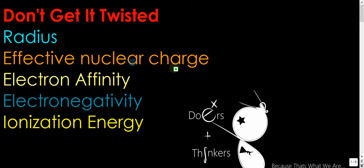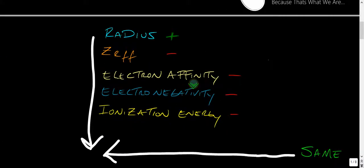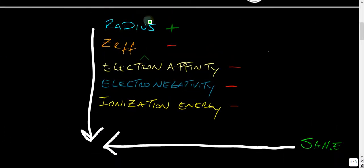So, radius, effective nuclear charge, electron affinity. Basically, I'm going to throw it on out there. Here's all you really need to know. Pop these two arrows down, and you know that the radius increases from top to bottom, and it increases from right to left.